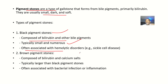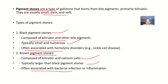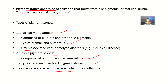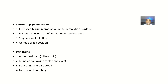Black pigment stones are often associated with hemolytic disorders like sickle cell disease. Brown pigment stones are composed of bilirubin and calcium salts, and are typically larger than the black pigment stones. They are often associated with bacterial infections and inflammation.